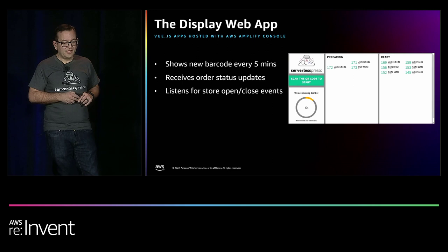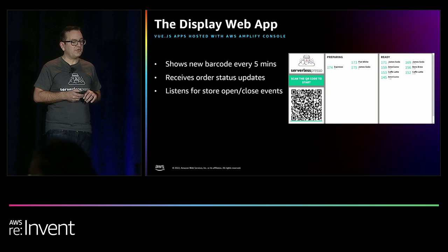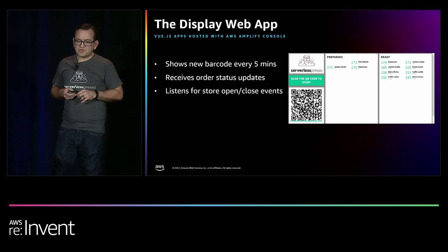The Display web app is what's on the screen behind the baristas. It shows a dynamic barcode that changes every five minutes, the order status of orders in the queue, and drinks that are ready. It also responds to global events like the store being opened and closed.